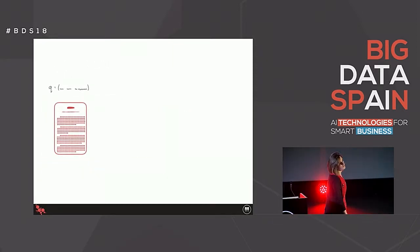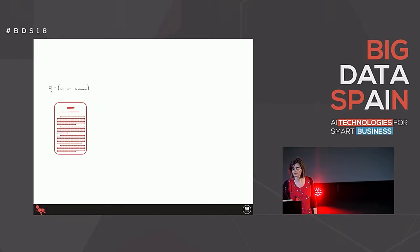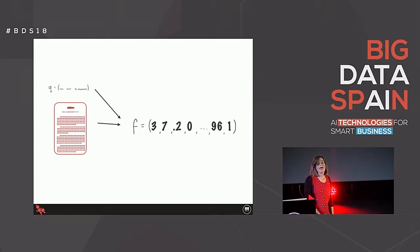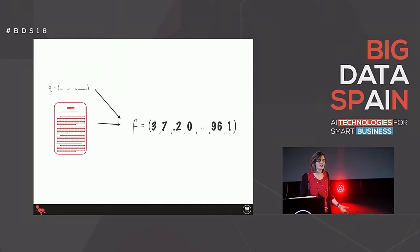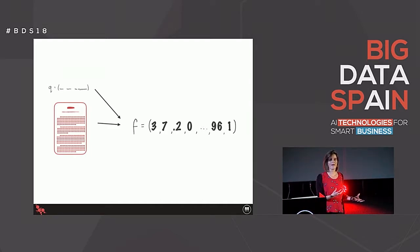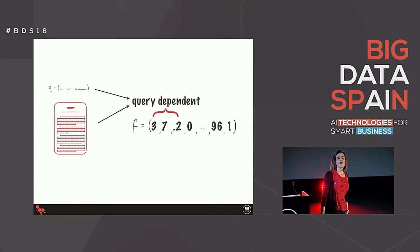All the machine learning techniques we're going to talk about today begin the same way. We've got ourselves a query and a document, and what we want to do is capture the information overlap between the two. The way that is done is to generate a feature vector - for every query-document pair, we want a feature vector, which is a numeric vector.